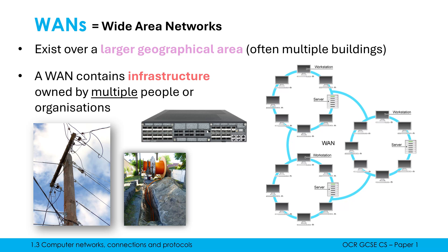The best and biggest example of a WAN is the internet, because it's massive, but also because we've got so much shared infrastructure involved. For you to watch this video, the messages are passing through so many different computers and devices owned by different companies. It's not only owned by you or me — we are sharing this infrastructure to enable us to communicate.